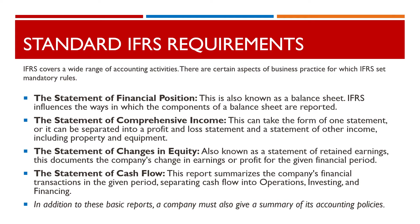The IFRS covers a wide range of accounting activities, and there are certain aspects of business practice for which IFRS sets mandatory rules. These include the statement of financial position, also known as a balance sheet, where the IFRS influences the ways in which the components of a balance sheet are reported. The statement of comprehensive income can take the form of one statement, or it can be separated into a profit and loss statement and a statement of other income, including property and equipment. The statement of changes in equity, also known as a statement of retained earnings, documents the company's change in earnings or profit for the given financial period.